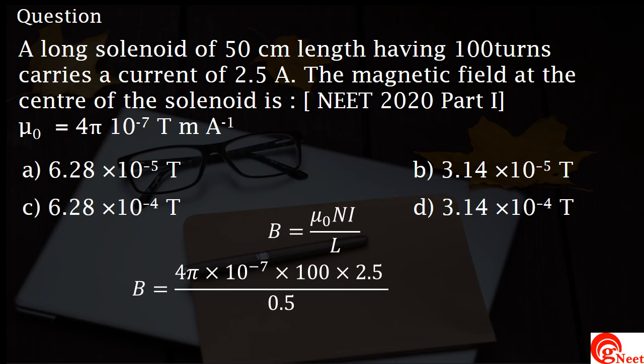Now, simplifying the expression, 4 into 2.5 is equal to 1, 1 divided by 0.5 is equal to 2, π into 2 is approximately 6.28 and 100 into 10⁻⁷ is 10⁻⁵.